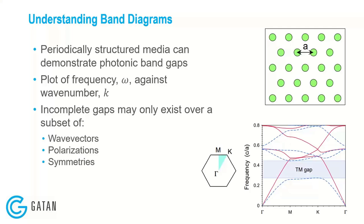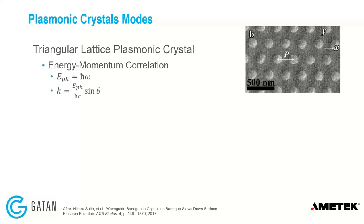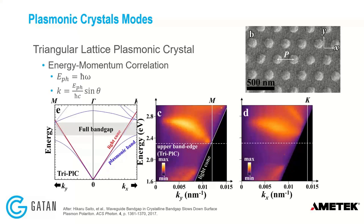As an example, I present a study from Hikaru Saito where metallic nanodots on an indium phosphide substrate, arranged in the same triangular lattice, generated a plasmonic crystal on the surface. Using CL, they were able to observe the full bandgap. The bandgap is generated and you can observe it using CL by looking at wave vector versus energy — something you can experimentally observe using CL, which we'll demo later.